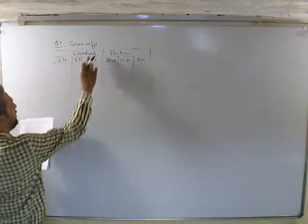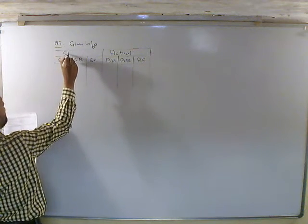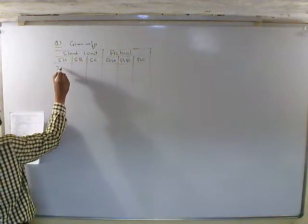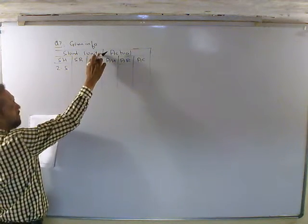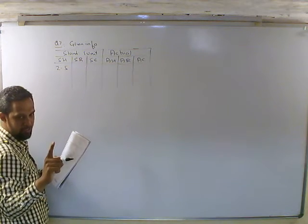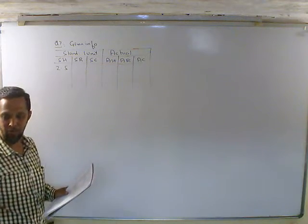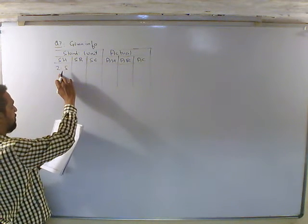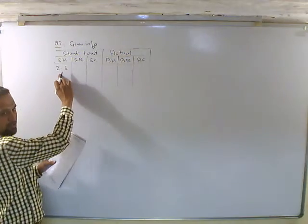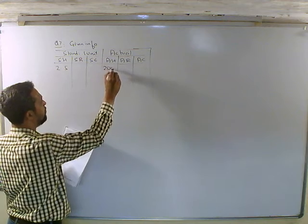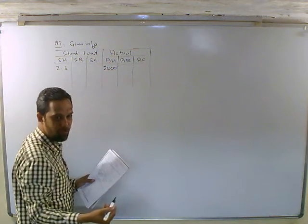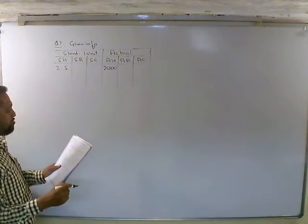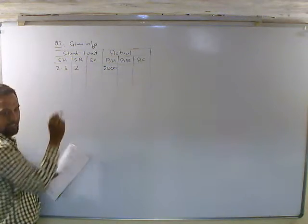Standard time per unit — per unit याने एक unit का है. यह जो standard यहाँ पर लिखने वाले हो, this is for one unit. एक unit में 2.5 hours. Actual hours paid: 2,000 hours — कहाँ लिखते हैं? AH में, 2,000 hours. Standard rate of wages ₹2 per hour — standard rate में डाल दिया, 2 per hour. Idle time वाले को ignore करो, बाद में बताएंगे.